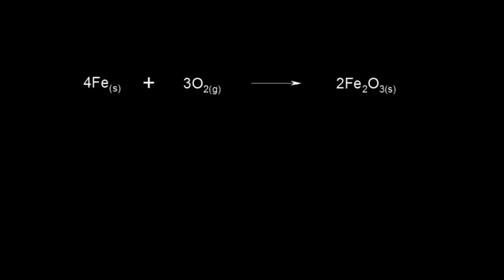Let's look at a few redox reactions and assign oxidizing and reducing agents. This is a famous reaction — the rusting of iron. Here we have some iron metal and we add some oxygen gas to it and we form iron oxide as our product.